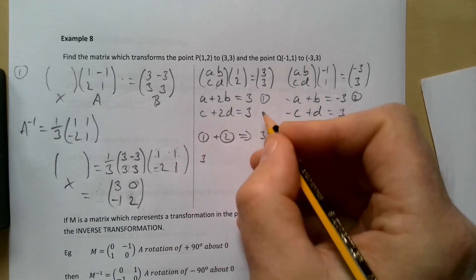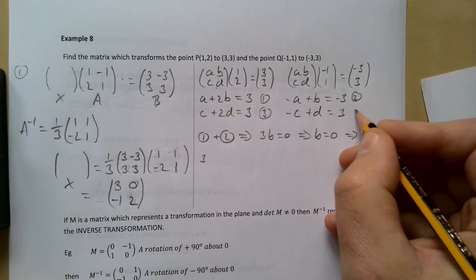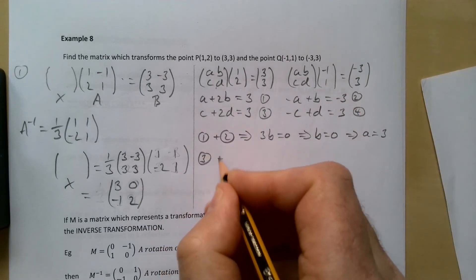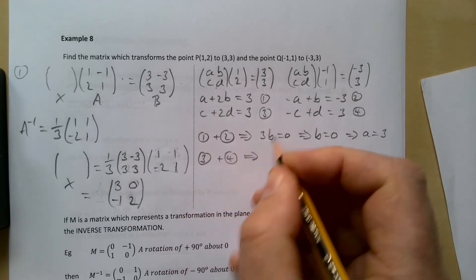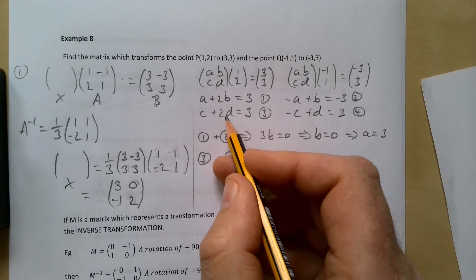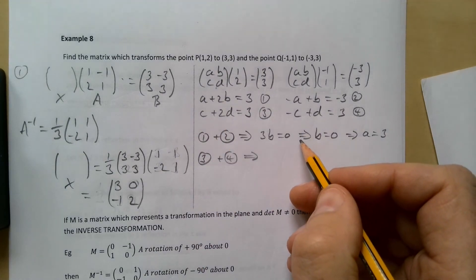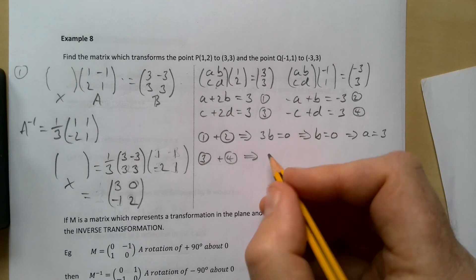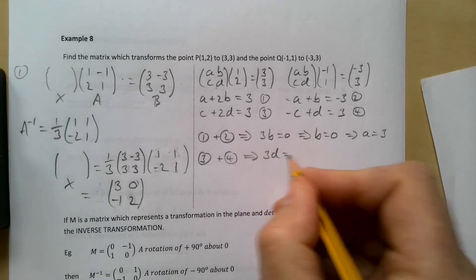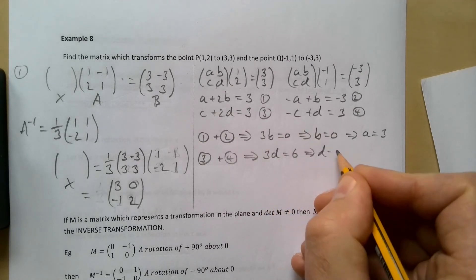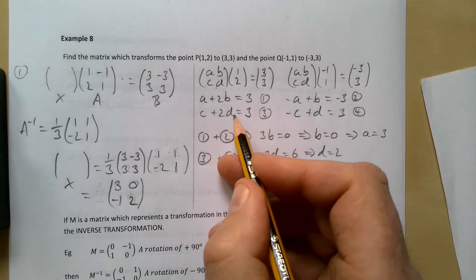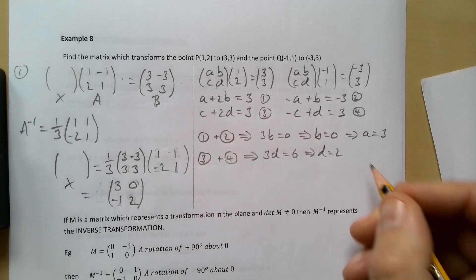Calling this one equation 3 and this one equation 4, adding these I'm going to get 3d equals 6. That gives me d is 2. If d is 2 then c is going to be minus 1.